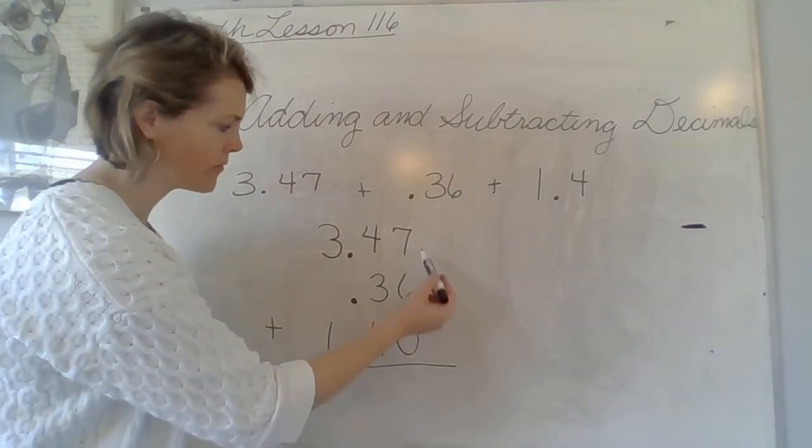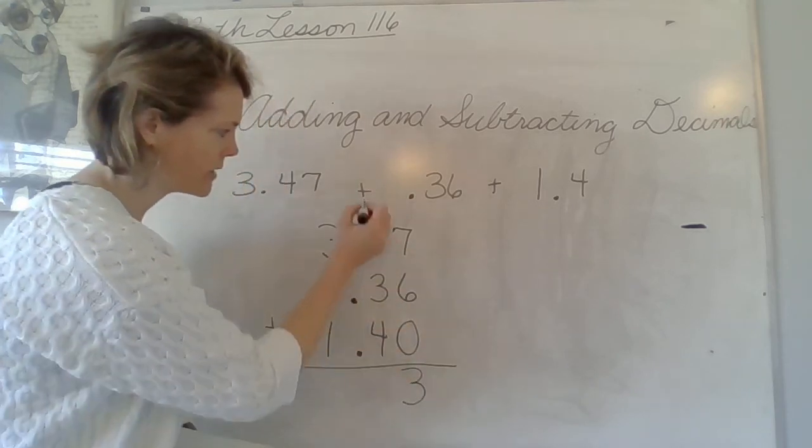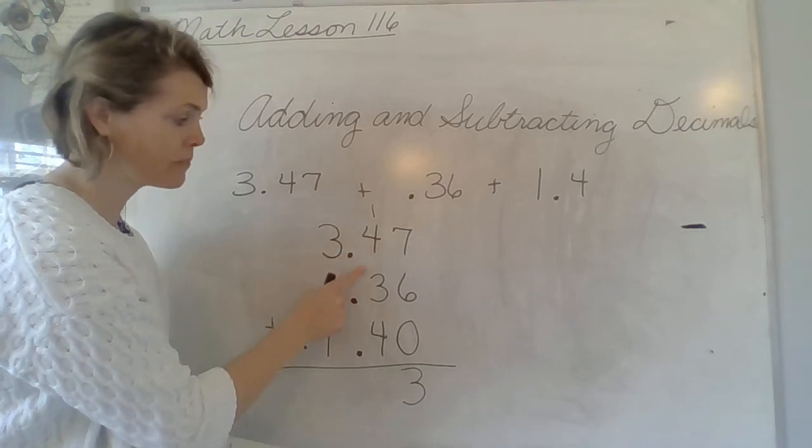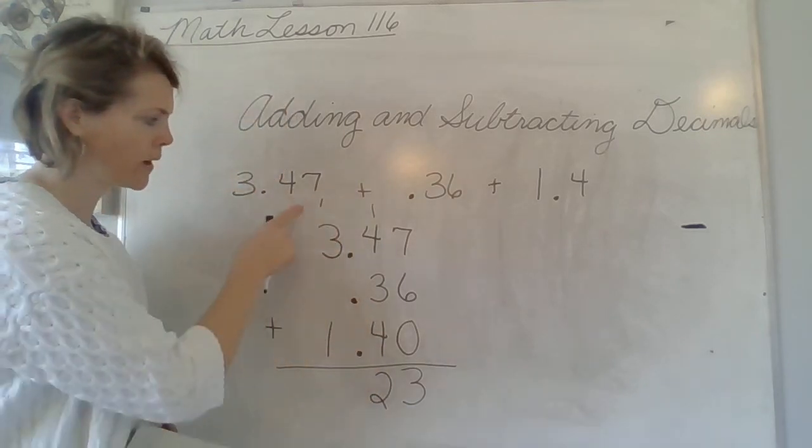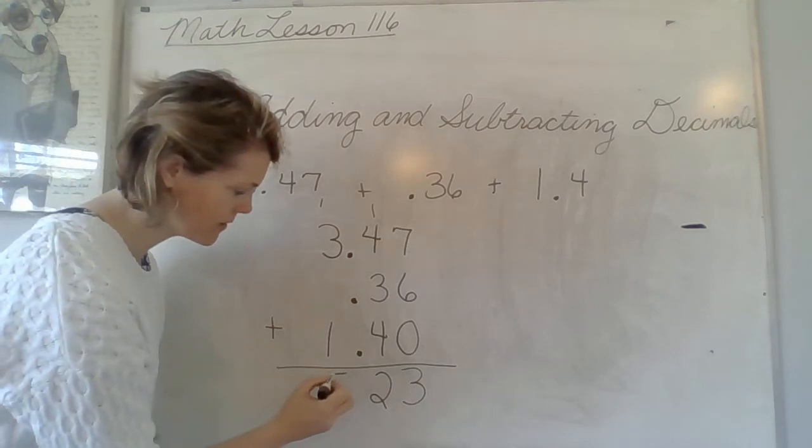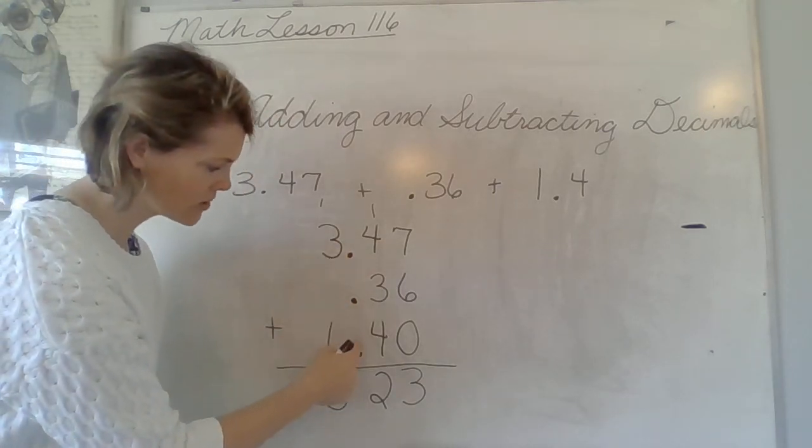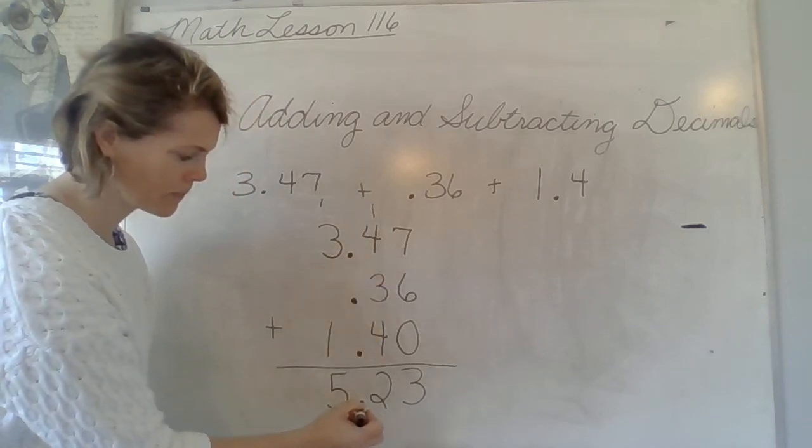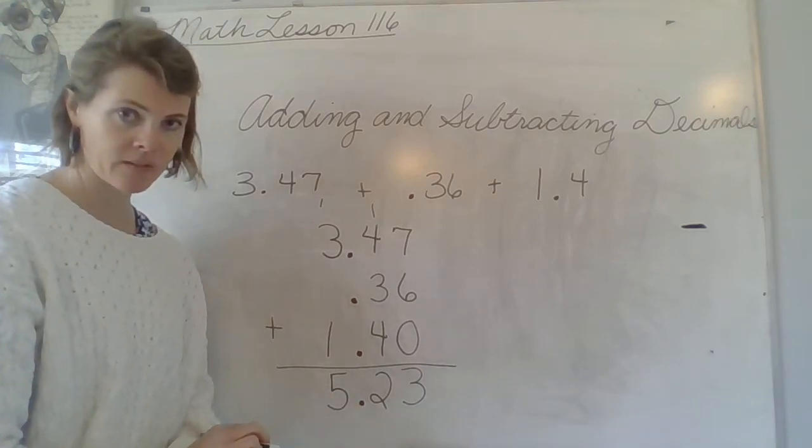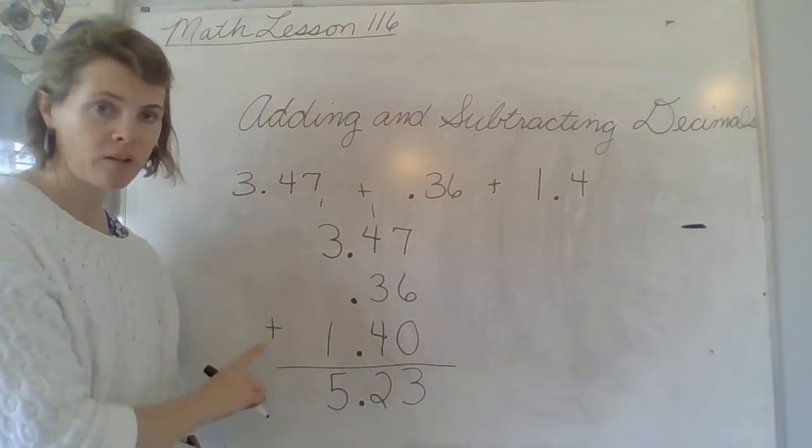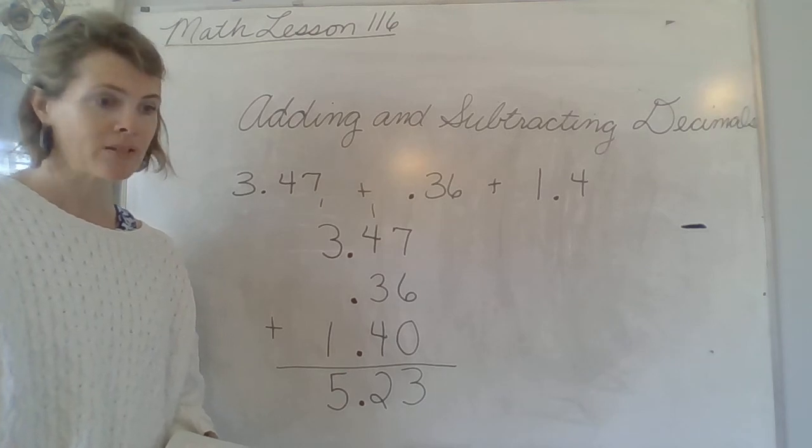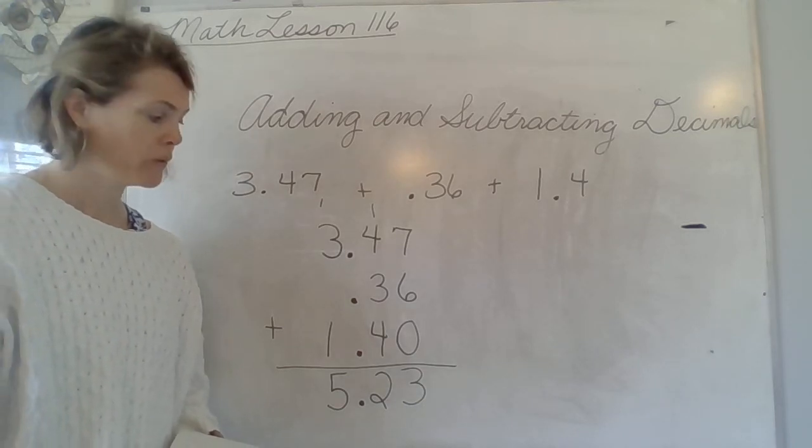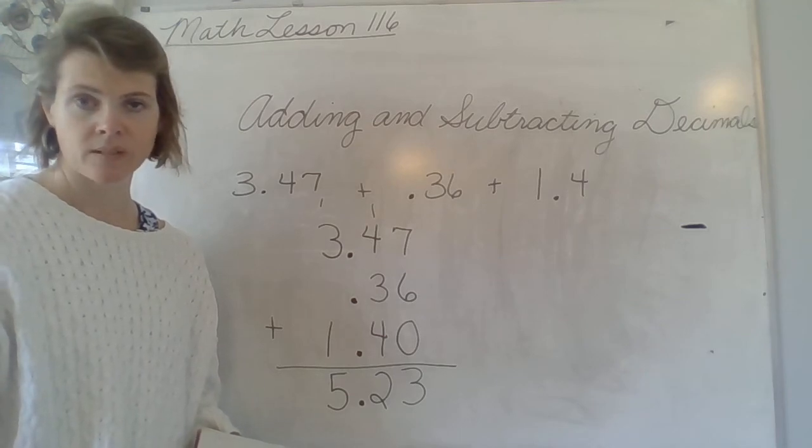Let's add these up. 7 plus 6 is 13. Put my 3 down, carry the 1. 1 plus 4 is 5. 5 plus 3 is 8. 8 plus 4 is 12. Put my 2 down, carry the 1. 1 plus 3 is 4. 4 plus 1 is 5. And, because I keep my things all in a line, my decimal is going to go right in that same line. And that's my answer. 5 and 23 hundredths. Notice, this isn't money. There's no dollar signs, just decimal points. 5 and 23 hundredths could be in a measurement of gas or a measurement of liquid or a measurement of anything. So, know that it doesn't always mean money that we use with decimals.